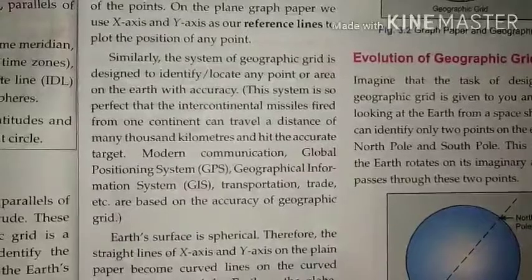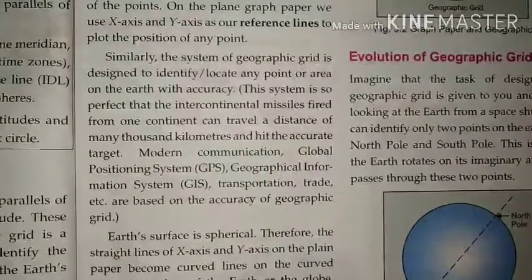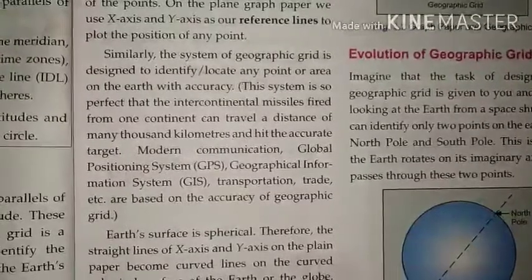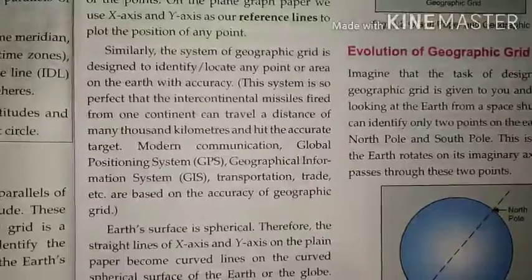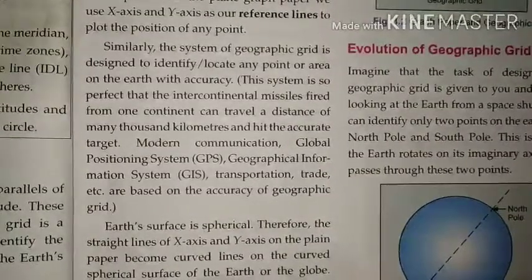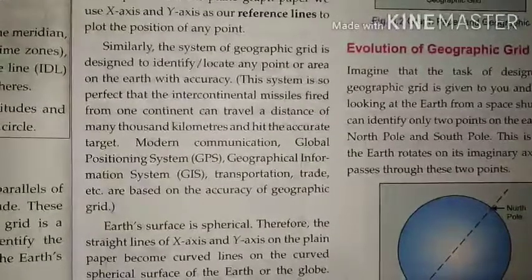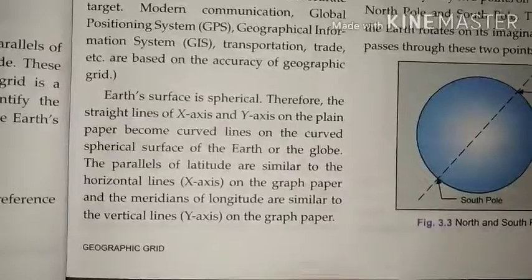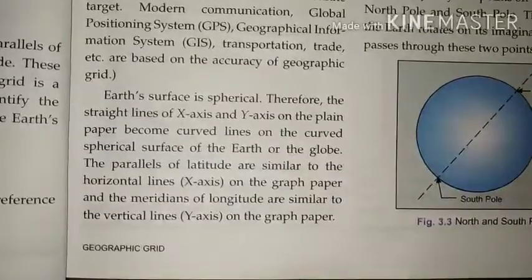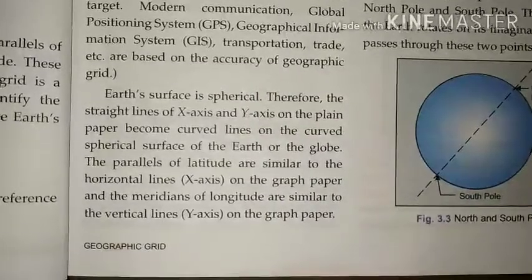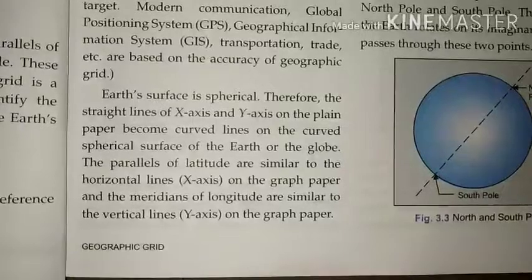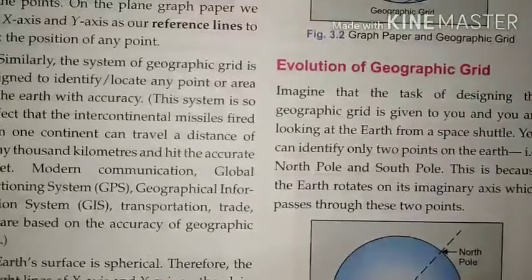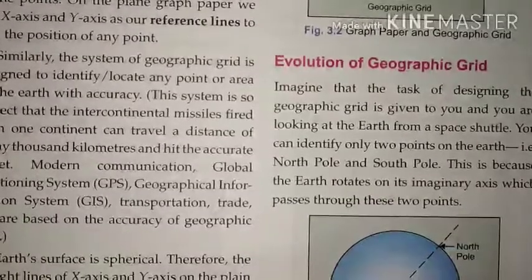GPS and GIS are used in transportation and even in aviation — how airplanes fly and reach their desired destination at a specific airport. This is possible because of the accuracy of the geographic grid. Since the earth's surface is spherical, the straight lines of x-axis and y-axis on plane paper become curved lines on the globe. Parallels of latitude are similar to the horizontal x-axis, and meridians of longitude are similar to the vertical y-axis.